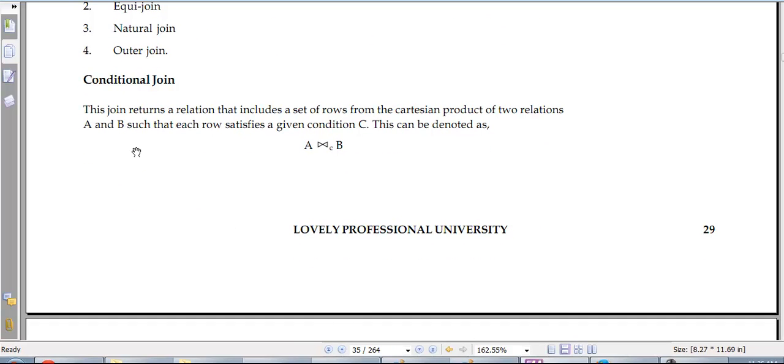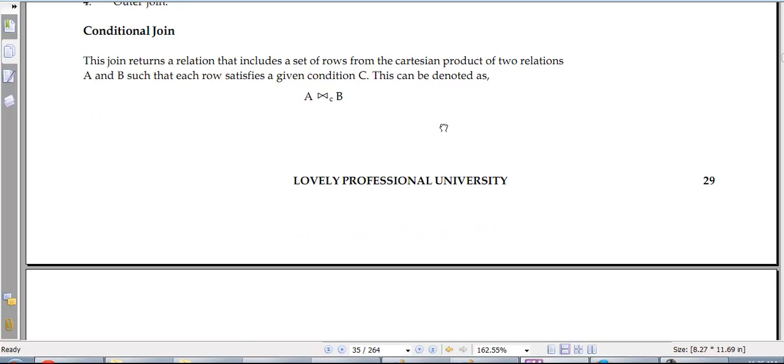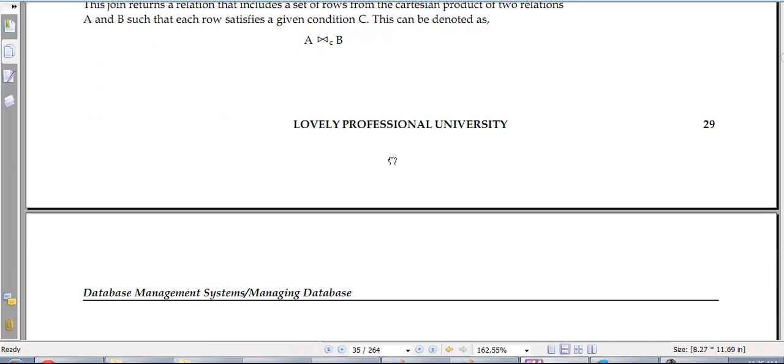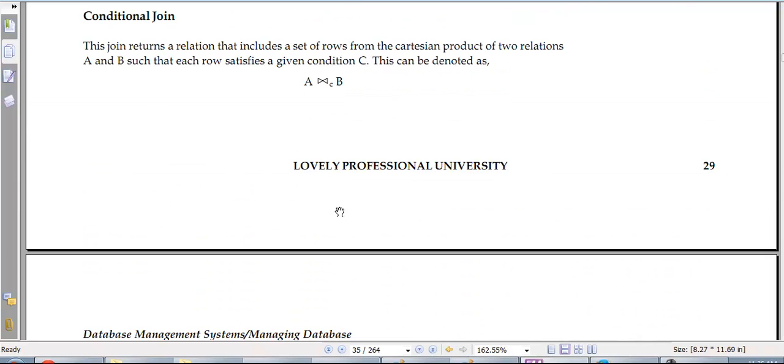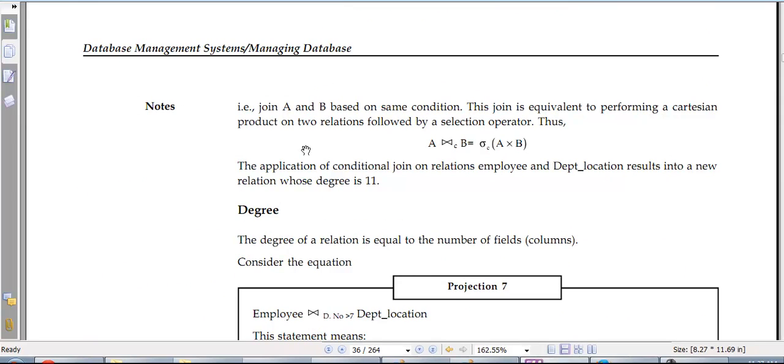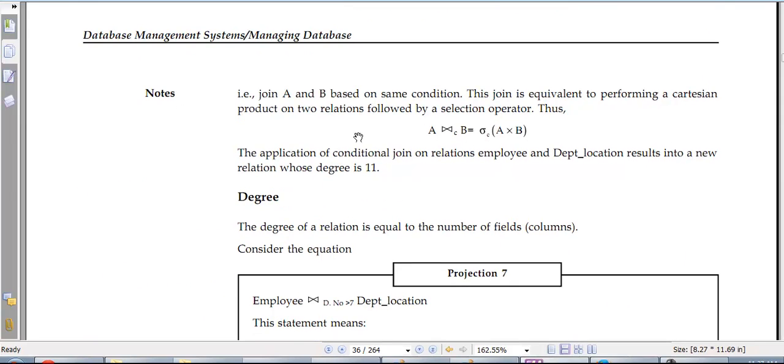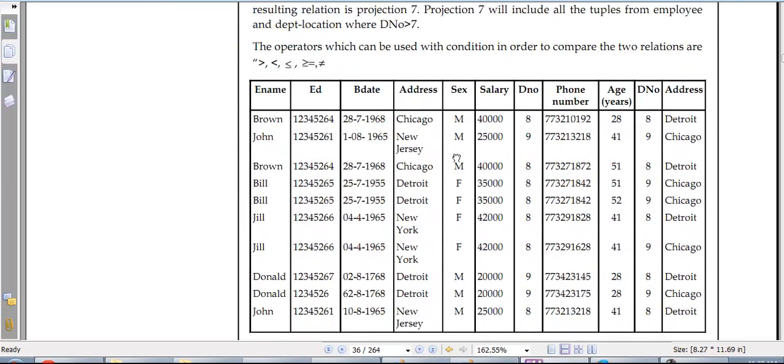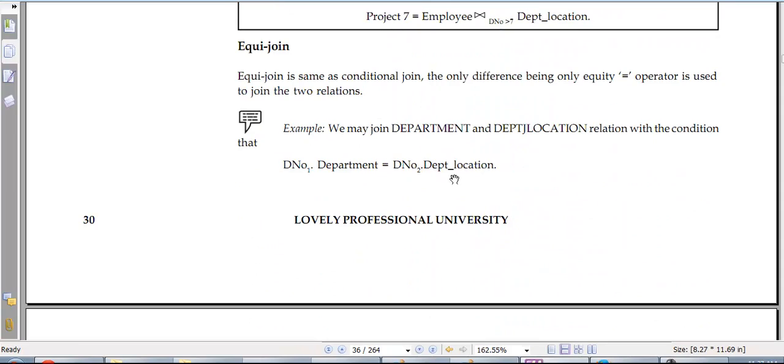Conditional join: this join returns a relation that includes a set of rows from the Cartesian product of two relations A and B such that each row satisfies a given condition C. And this is the given condition. If you see these are crossed and then you have C written on the downside. Join of A and B is equal to performing a Cartesian product, and thus it is σ_C of A × B. Then you can do the join.